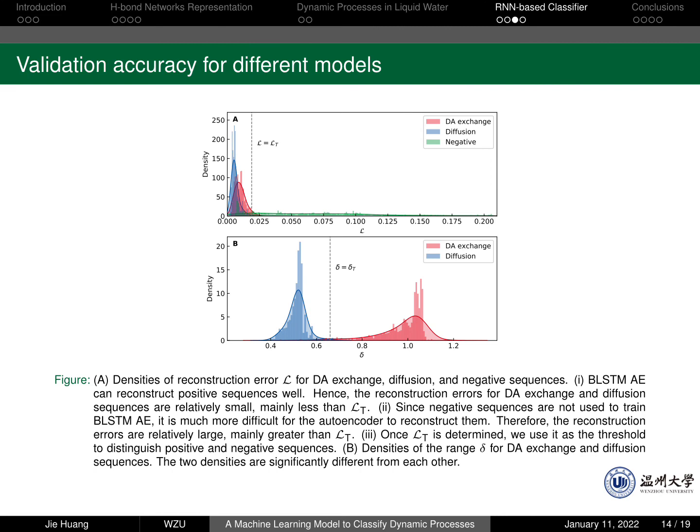As we can see from figure A, the densities of reconstruction error for DA-exchange, diffusion, and negative sequences. The autoencoder can reconstruct the positive sequences well, so the reconstruction error for DA-exchange and diffusion sequences are relatively small. Besides, since negative sequences are not used to train the autoencoder, it is much more difficult for the autoencoder to reconstruct them. Then we can use a threshold, LT, to determine whether a given sequence is positive or negative, roughly. Figure B shows the densities of range for the exchange and diffusion sequences. We can see that the two densities are significantly different from each other, so we can tell the two very easily.